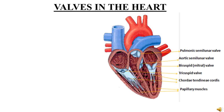Moving on to the valves which are present in the heart. A valve is a membranous fold in a hollow organ or tubular structure which maintains the flow of contents in one direction by closing in response to pressure from reverse flow. That means the valves in the heart are unidirectional — they only support unidirectional flow of blood.